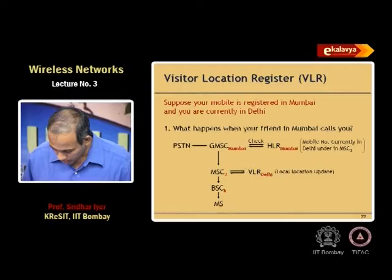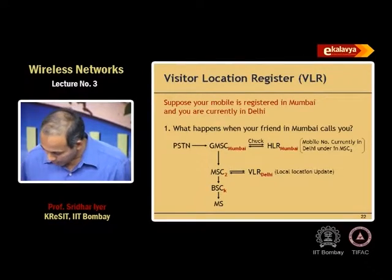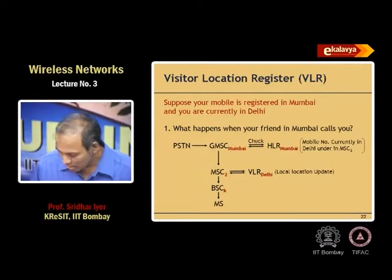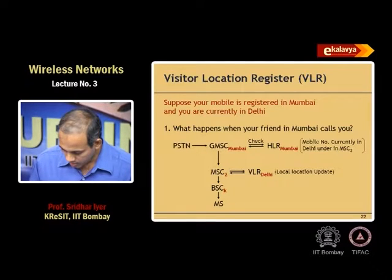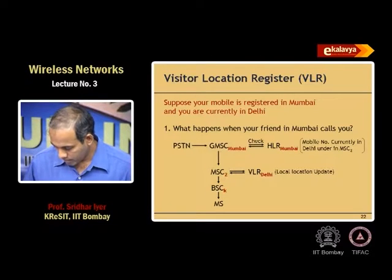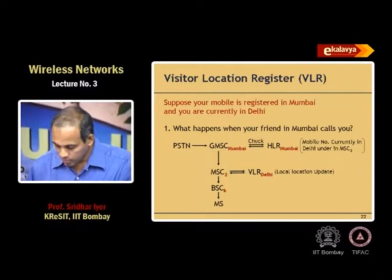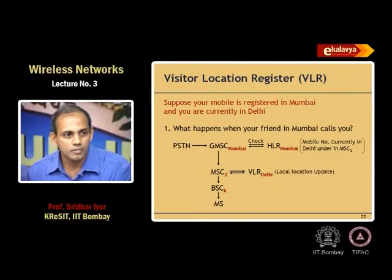Let me give a summary of GSM. We have a bunch of logical channels, physical channels, various types of mapping and so on. Let me elaborate on the VLR by framing a question: suppose your mobile is registered in Mumbai and you are currently in Delhi. What happens when your friend in Mumbai calls you? How does the call get established? What will be the steps?